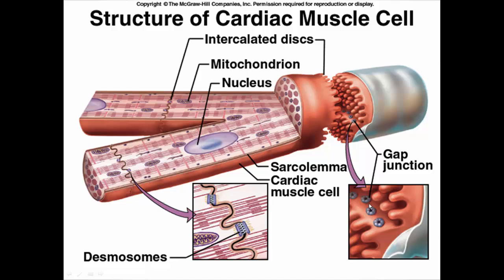The other structure in the intercalated disc is the gap junctions. These are basically pores or holes between two adjacent cells, and that allows the cytoplasm to move between one cell and the next. We need that because we want action potentials to travel from one cell to the next. We don't want synapses like you see with neurons, because that takes too long. We need to get action potentials from one cell to the next very quickly, and that's what those gap junctions allow us to do.